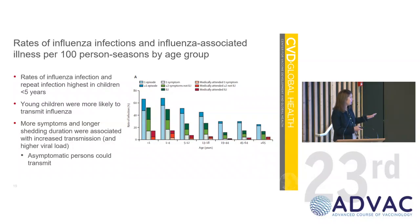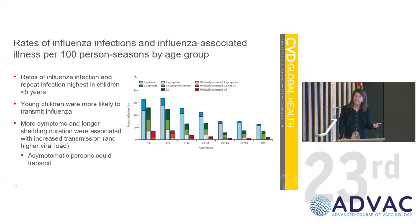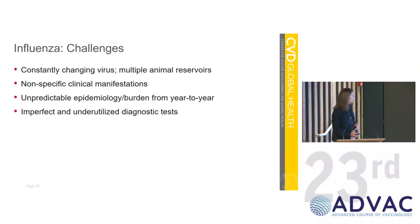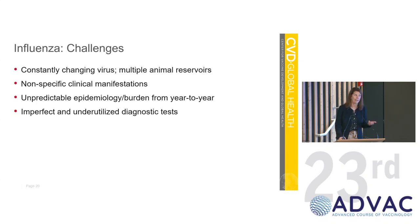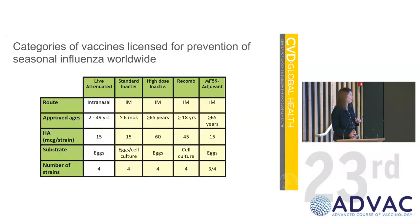More symptoms and longer shedding duration were associated with increased transmission and higher viral load. Unfortunately, asymptomatic persons can also transmit — again, a lot of what we see with coronavirus. So the challenges so far: this is a constantly changing virus, multiple animal reservoirs, nonspecific clinical manifestations, unpredictable epidemiology and burden from year to year, and imperfect and underutilized diagnostic tests. Vaccination programs are going to be challenging.